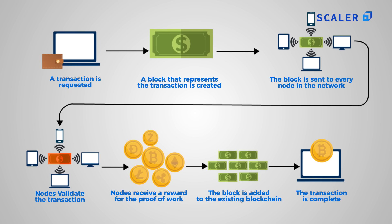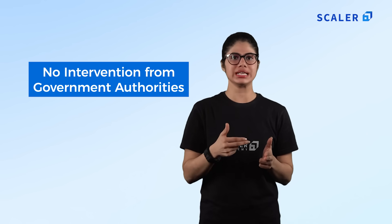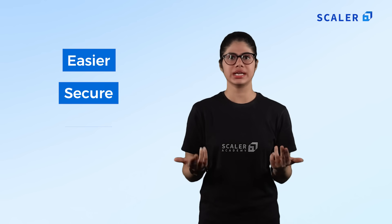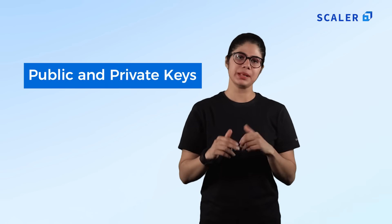The advantages of cryptocurrency include being a secure way to make payments and holding the promise of making fund transfers easier between two parties without a third party like a bank or credit card company. Transfers on the blockchain are secured by private and public keys and incentive programs such as proof of stake or proof of work. Key benefits include minimal processing fees, no government intervention, faster and secure transactions without third parties, inflation resistance, and secure transfers via public and private keys.